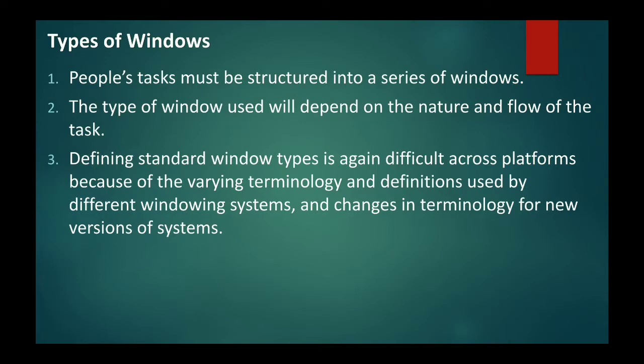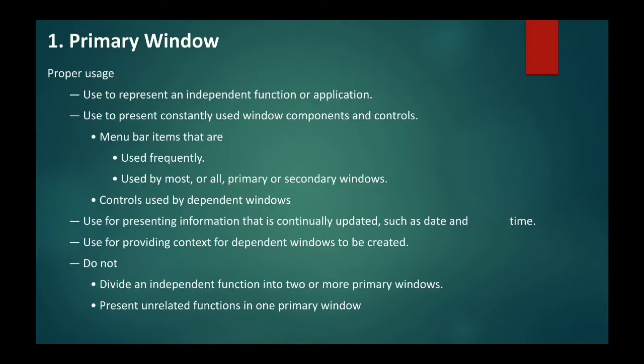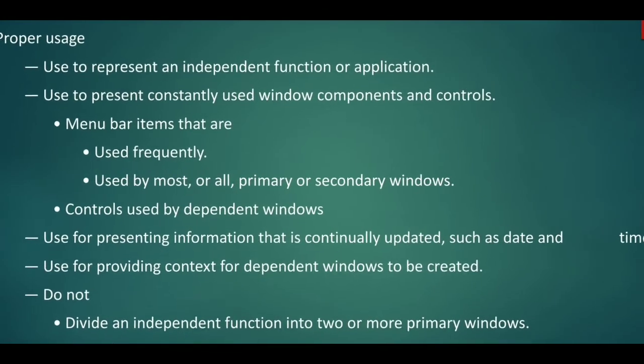Both windows have different usages, different guidelines, and different tasks. The primary window is the main window — we can call it the parent window. The secondary window is called the child window. The primary window does not depend on any other window, but the secondary window may or may not depend on the primary window, as we will see later.